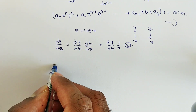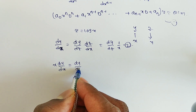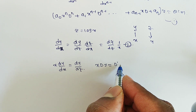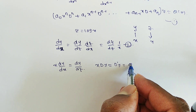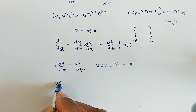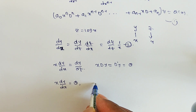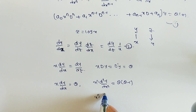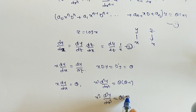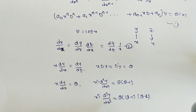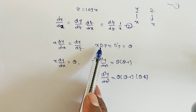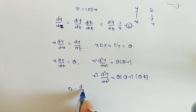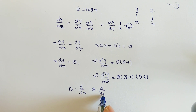We define the operator theta (θ) such that x · dy/dx = θy, where θ denotes differentiation with respect to z, while d denotes differentiation with respect to x. Similarly, x² · d²y/dx² = θ(θ-1)y, and x³ · d³y/dx³ = θ(θ-1)(θ-2)y. Remember: d is d/dx, and θ is d/dz.